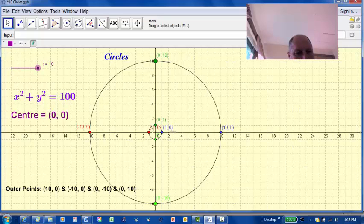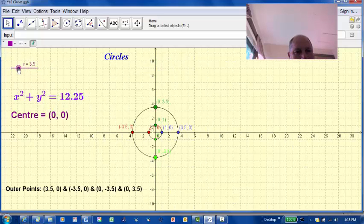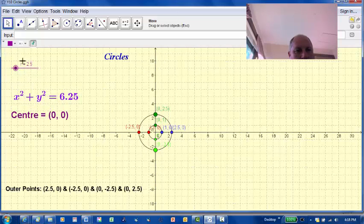What would happen if we made r equal 2.5? Well, the square of 2.5 is 6.25. And each point would be 2.5 units from the center 0, 0.